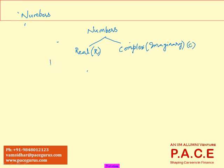If a number can be represented on a number line — starting from zero, one, two, and so on — and I can mark that particular number on this line, then I call it a real number. If I cannot mark it on the number line, it becomes complex or imaginary. For example, the square root of minus two: square roots are defined only for positive numbers, so it does not exist in the real world.